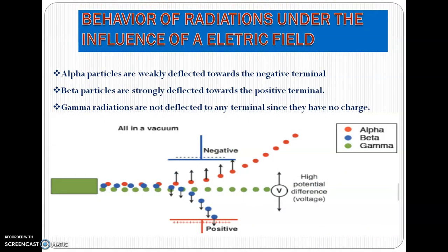What is the behavior of these radiations under the influence of an electric field? The diagram shows how these are deflected within an electric field. Since alpha particles are positively charged, they are weakly deflected towards the negative terminal. Beta particles, which are negatively charged, are strongly deflected towards the positive terminal. Since gamma radiations have no charge of whatever form, they proceed straight within an electric field.